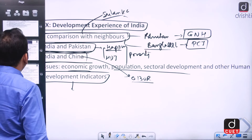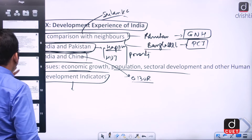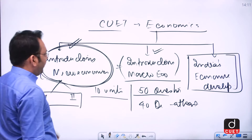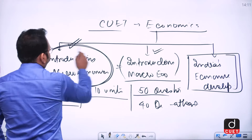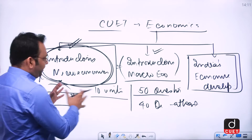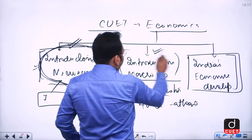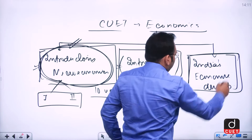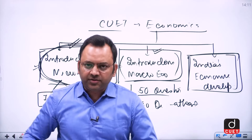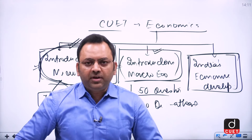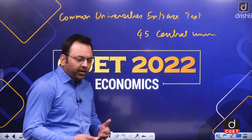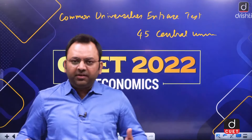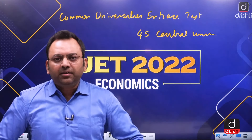To summarize, the CUET economics syllabus is classified into three parts — introductory microeconomics, introductory macroeconomics, and India's economic development — with units dealt separately in detail in the coming lectures. This was all about the CUET syllabus overview. Thank you.